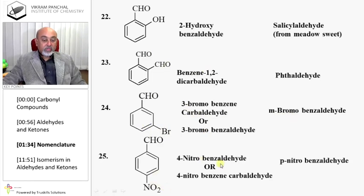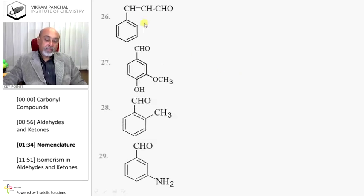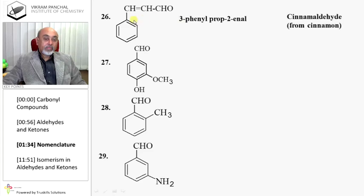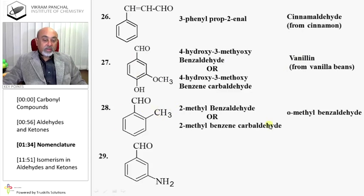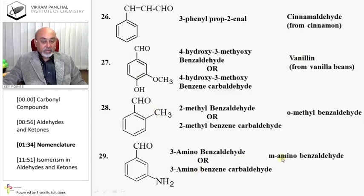Orthohydroxybenzaldehyde, or 2-hydroxybenzaldehyde, is also known as salicylaldehyde. Two CHO groups on adjacent carbons gives phthalaldehyde, or benzene-1,2-dicarbaldehyde. 3-Bromobenzaldehyde is also called 3-bromobenzene carbaldehyde or meta-bromobenzaldehyde. 4-Nitrobenzaldehyde is also called 4-nitrobenzene carbaldehyde or para-nitrobenzaldehyde.